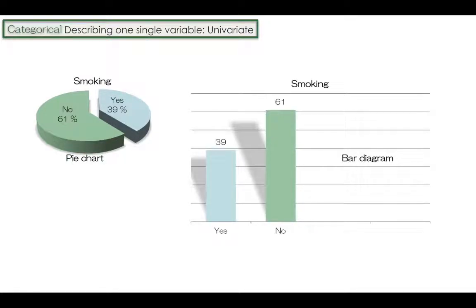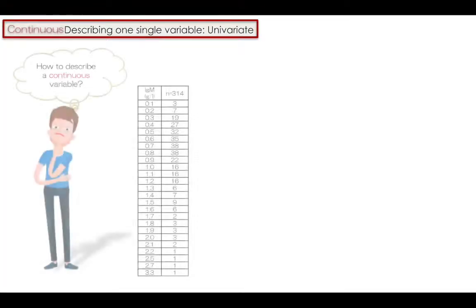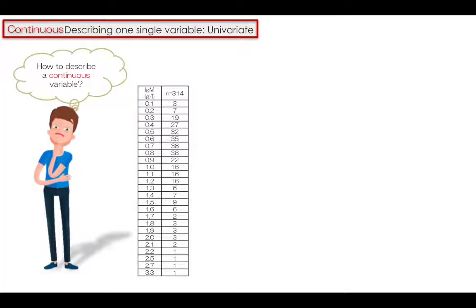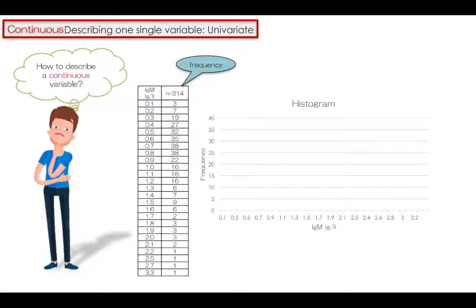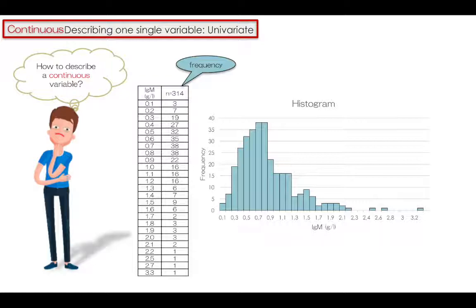Here is a pie chart and a bar diagram. Describing a continuous variable is not as easy as categorical variable. A continuous variable such as for example serum IgM comes with a large number of different observed values. Here we can have the table of frequencies, a histogram, or if we attach the tips we have a polygon.